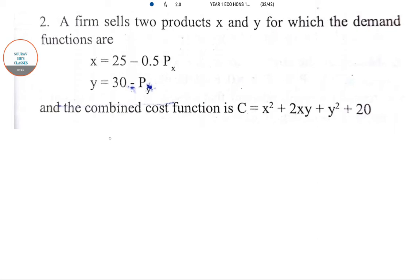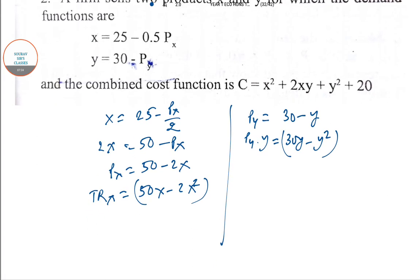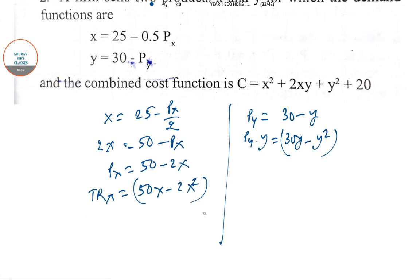Revenue function will be px × x but in terms of quantity. So x = 25 - px/2, so 2x = 50 - px, so px = 50 - 2x. So the revenue function is TR(x) = 50x - 2x². In the same way, py = 30 - y, so py × y is 30y - y². So these are the two different parts of the total revenue functions.